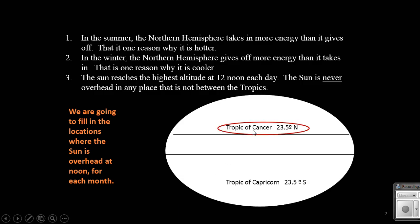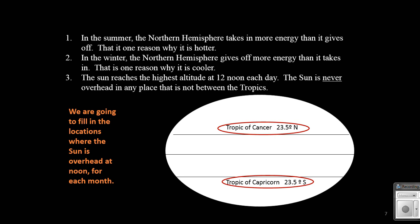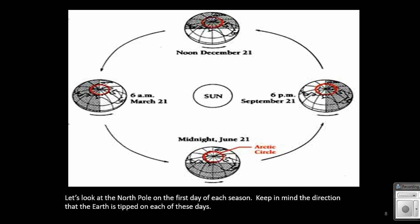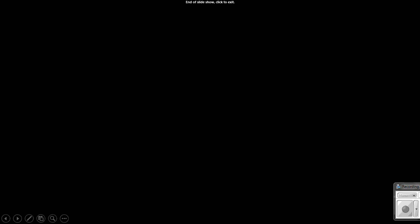Here's our Tropic of Cancer, which is where we get the most direct solar radiation in the summer, which helps to make it hotter. And then our Tropic of Capricorn, which is where our most direct solar radiation is at the winter solstice for the Northern Hemisphere — we're not getting as much direct solar radiation, and that makes it cooler. This one just gives you a little visual of the amount of daylight that we get. The next lesson will be about time.